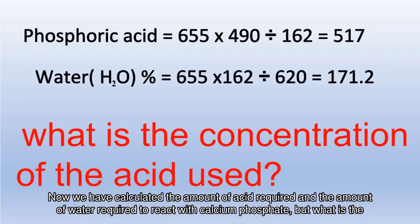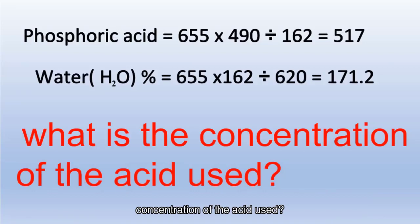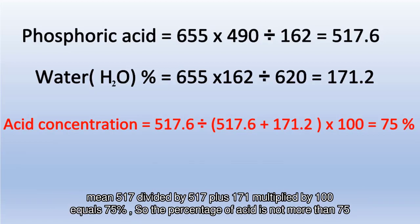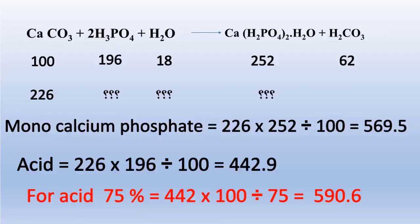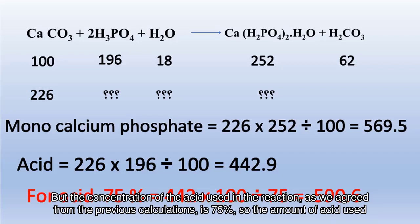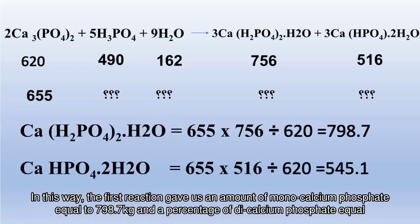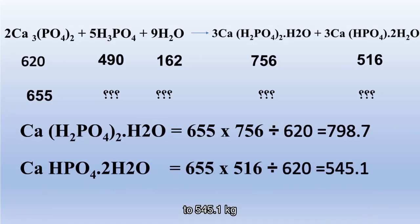We have now calculated the amount of acid and water required to react with calcium phosphate. The acid concentration used is calculated as follows: the amount of acid divided by the sum of acid and water, multiplied by 100 — that is, 517 ÷ (517 + 171) × 100 = 75%. So the acid concentration used is 75%, and the actual amount of acid used will be 442.9 × 100 ÷ 75 = 590.6 kilograms. The first reaction yielded 798.7 kilograms of monocalcium phosphate and 545.1 kilograms of dicalcium phosphate.